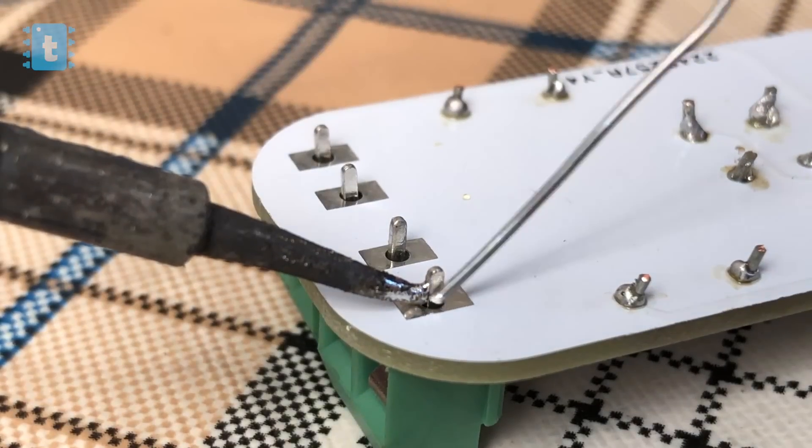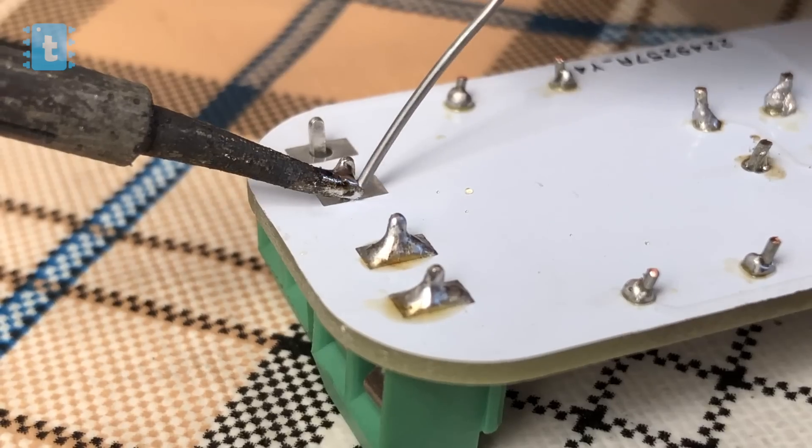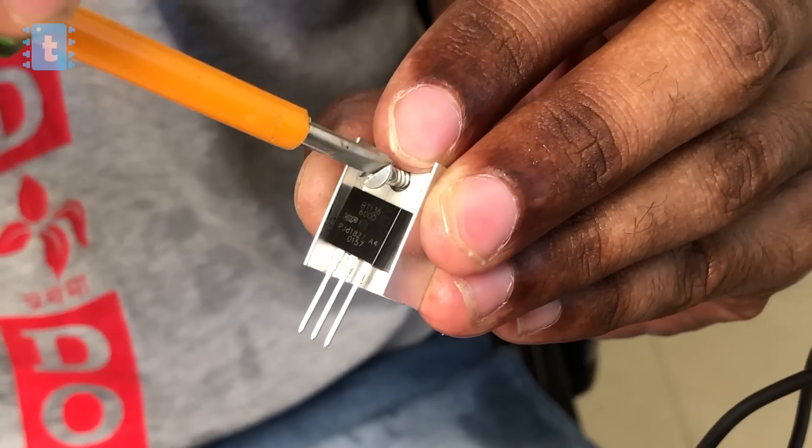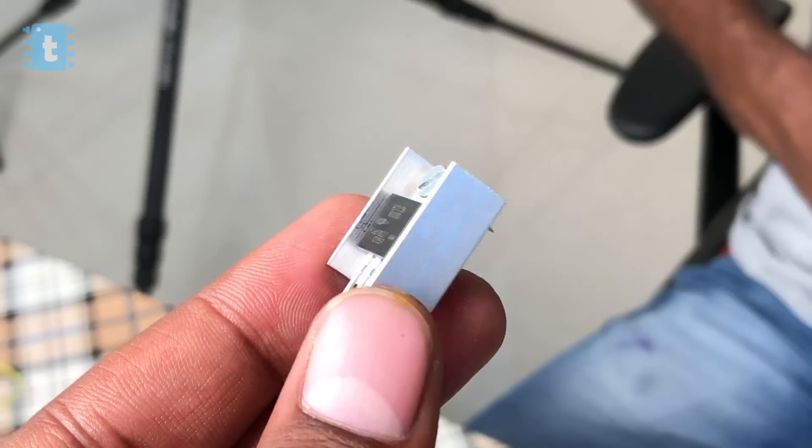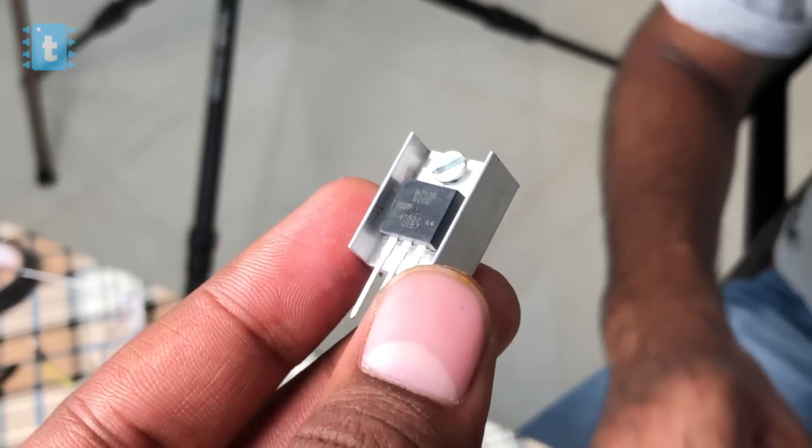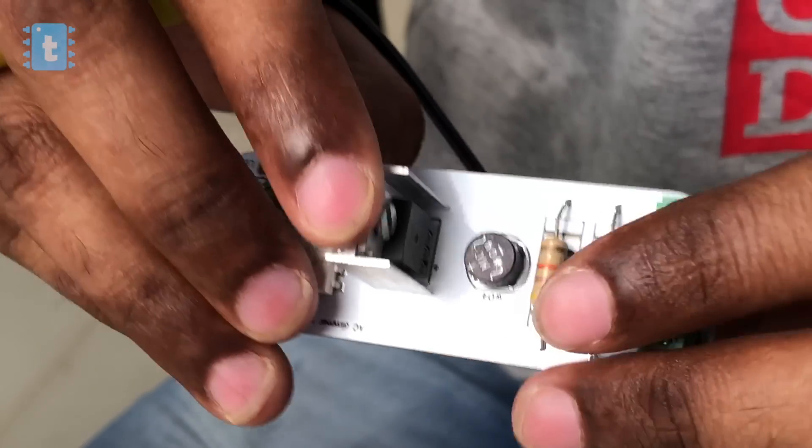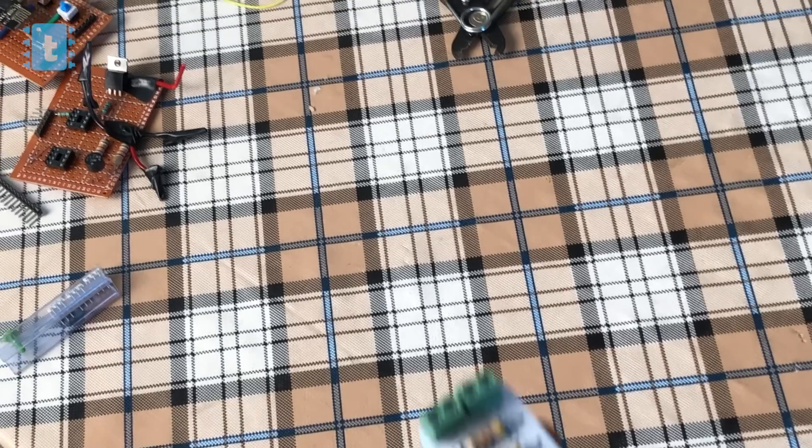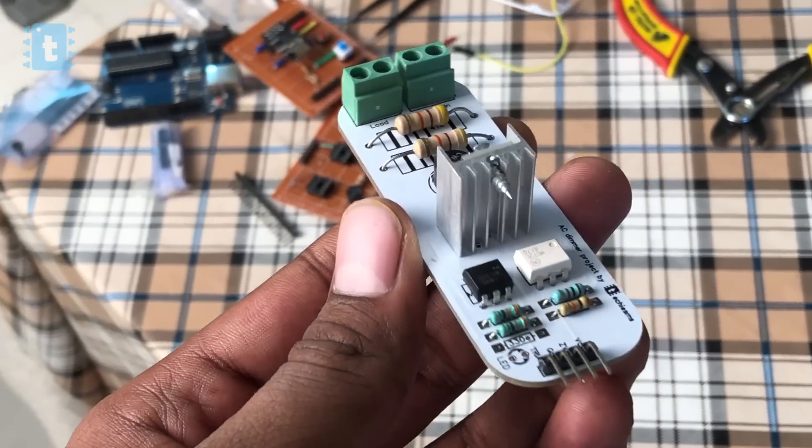Coming back to the video, now one by one I soldered all the components on the PCB. I have attached this heatsink with BT-136 just to make this project work more smoothly without getting much hot. After soldering all the components our PCB looks something like this - neat and well aligned.